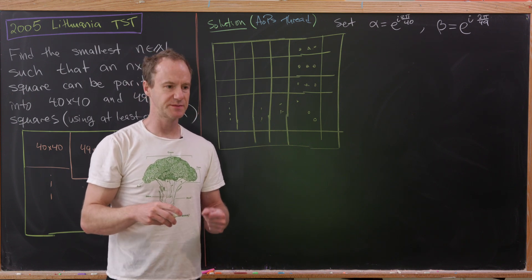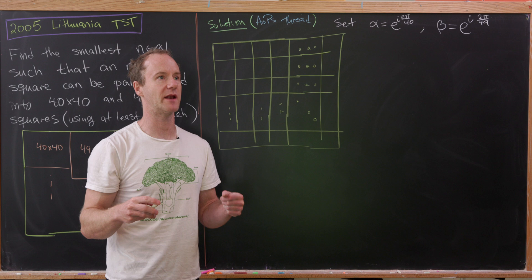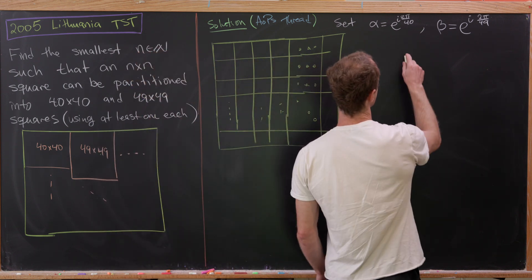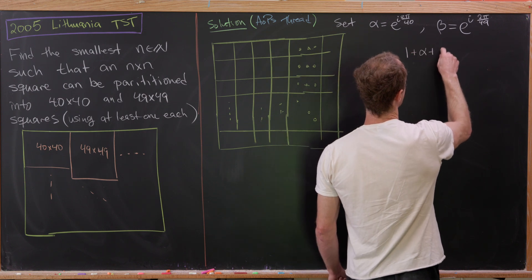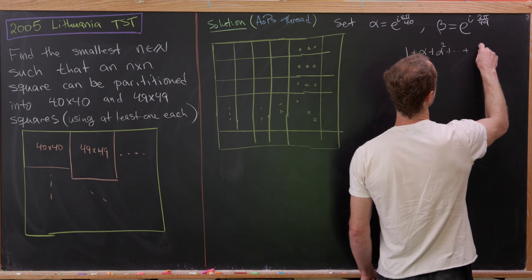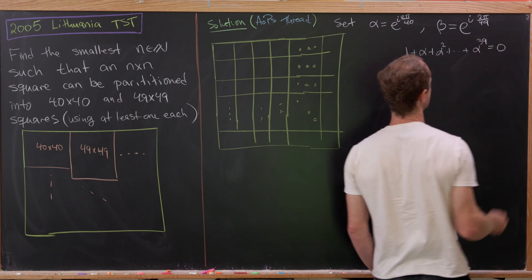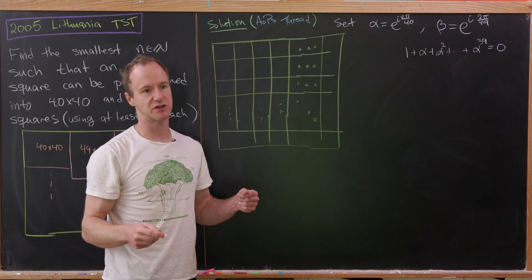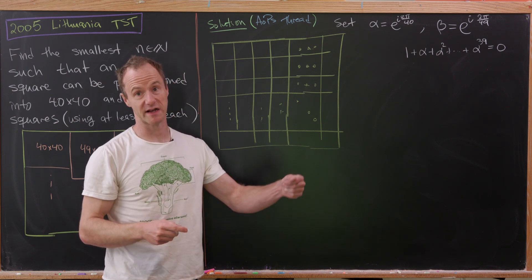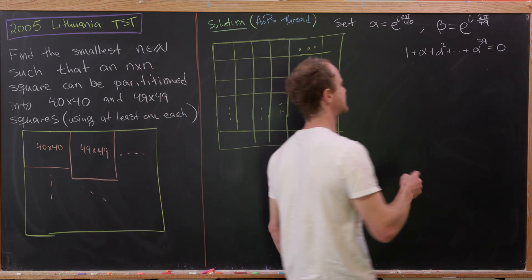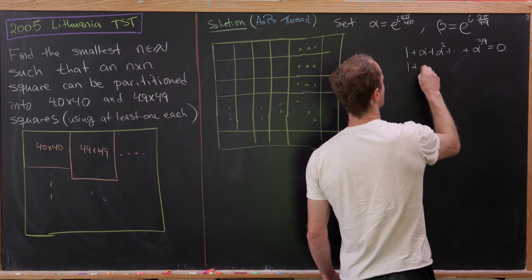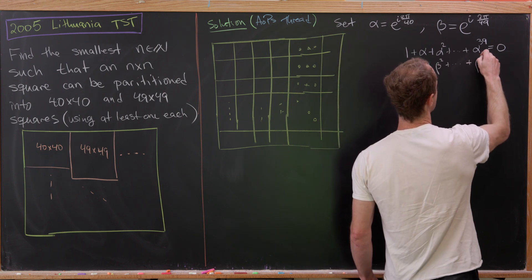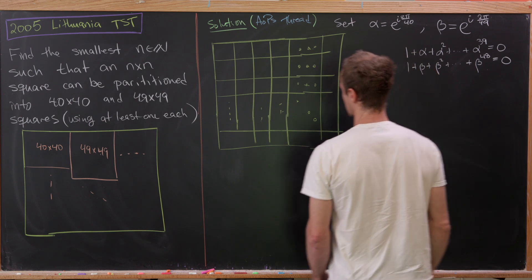Before we dive in, by factorization it's well known that primitive 40th and 49th roots of unity satisfy: one plus alpha plus alpha squared all the way up to alpha to the 39 equals zero. You can see that by factoring alpha to the 40 minus one as (alpha minus one) times the rest, and we know alpha minus one is not zero. Similarly, one plus beta plus beta squared all the way up to beta to the 48 is equal to zero. Those are going to be important.